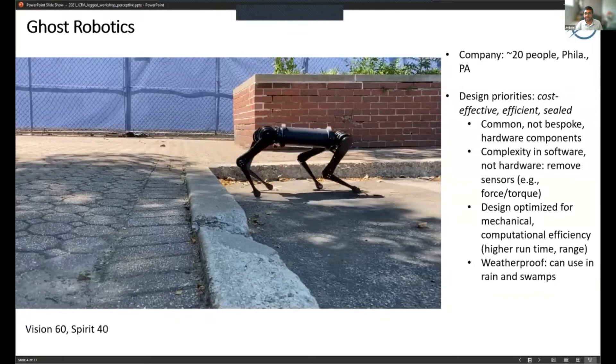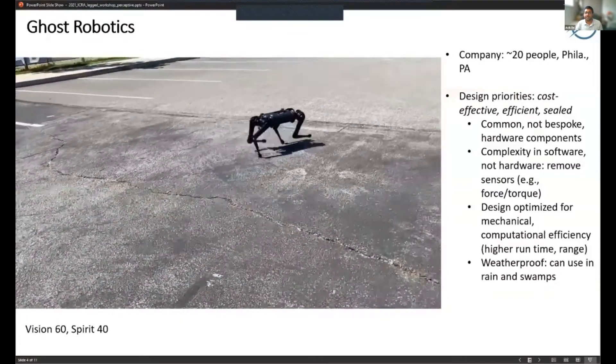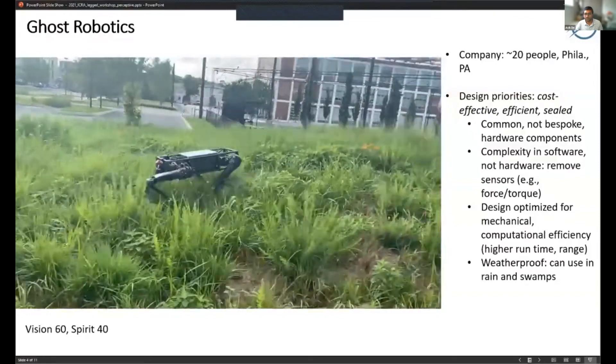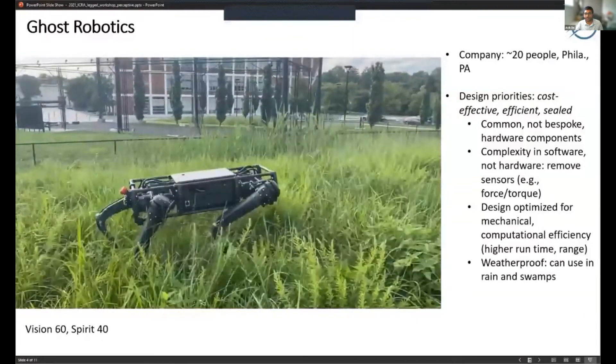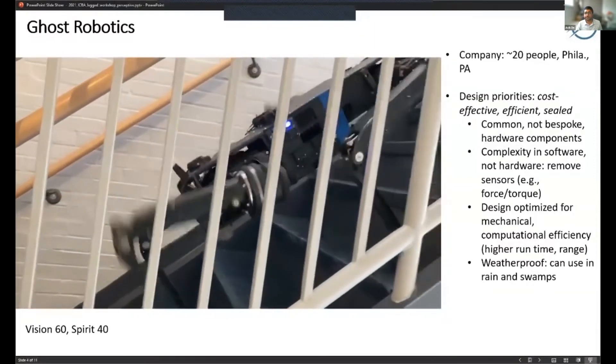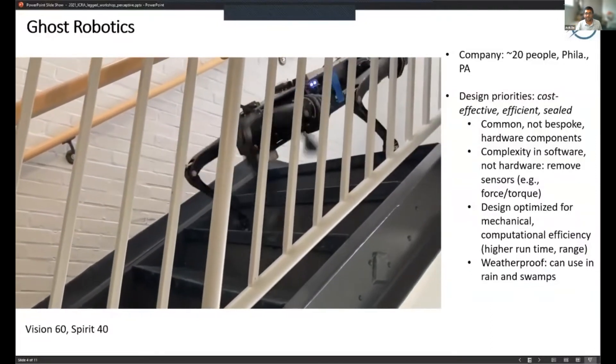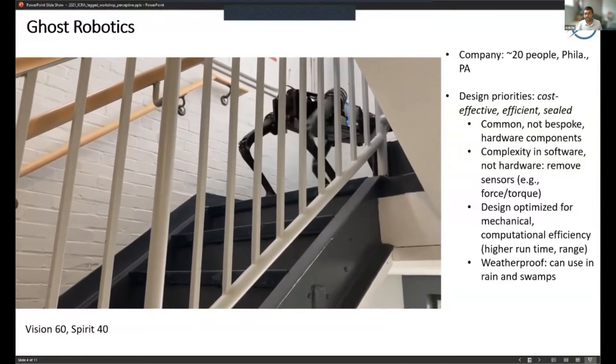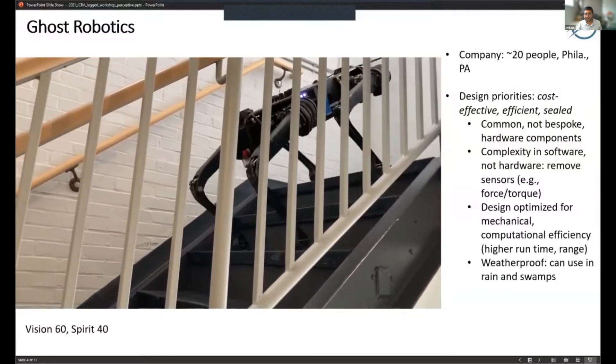We use more common hardware components and standard drivetrain elements so that the cost isn't automatically increased. We try to move as much of the complexity to software as possible - there's no joint torque sensing or anything like that. The actuators are torque controlled and we have momentum observers in software for estimation. We've spent a lot of time optimizing for mechanical and computational efficiency to maximize runtime, and it's IP67 sealed.